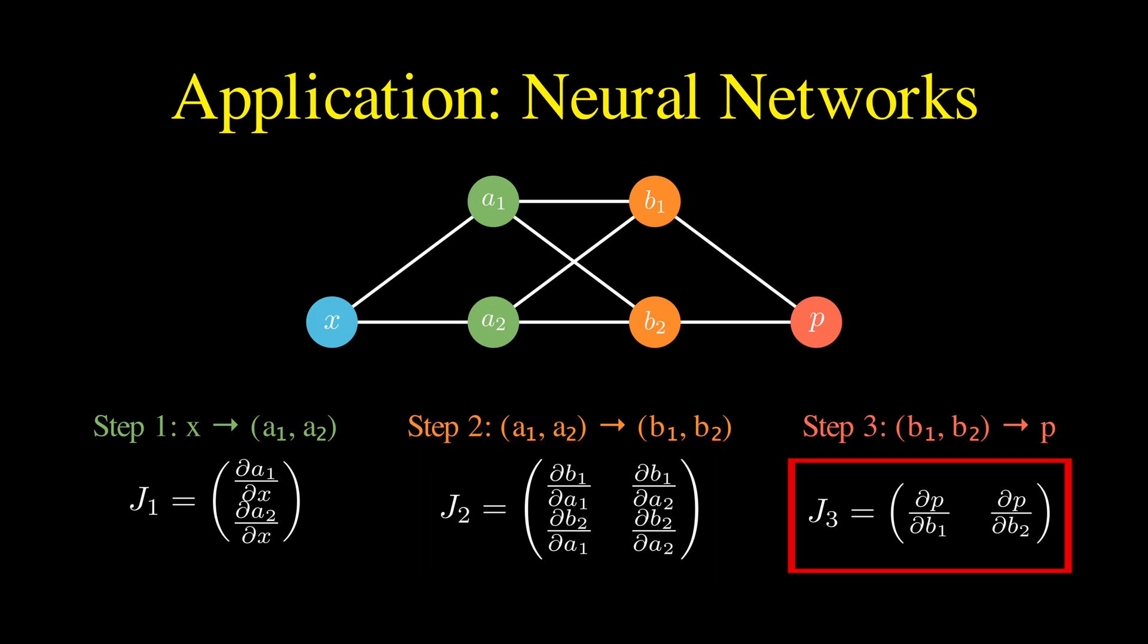The final transformation from the second hidden layer to the output p creates a 1 by 2 Jacobian matrix, representing one output function of two input variables.